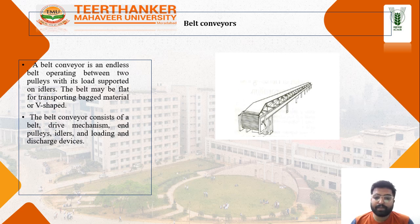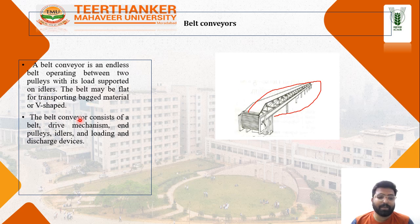The first type is the belt conveyor. As you can see from the figure, this is the belt conveyor. In a belt conveyor, the belt operates between two pulleys and the load is supported with idlers. The belt may be flat for transporting bagged material. The belt conveyor consists of the belt and loading and discharge devices.